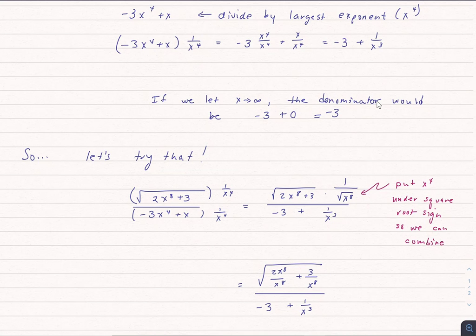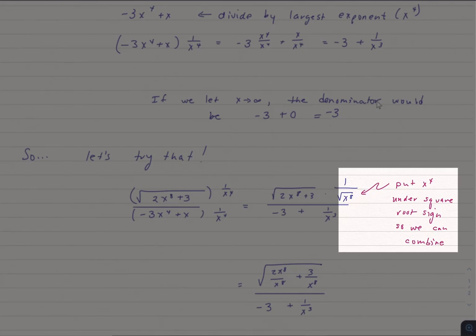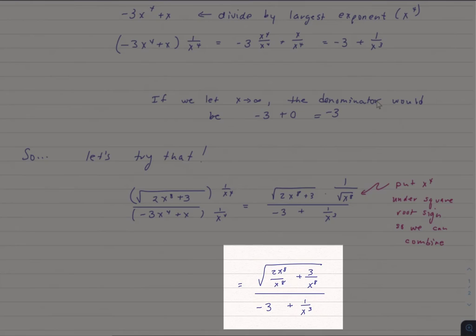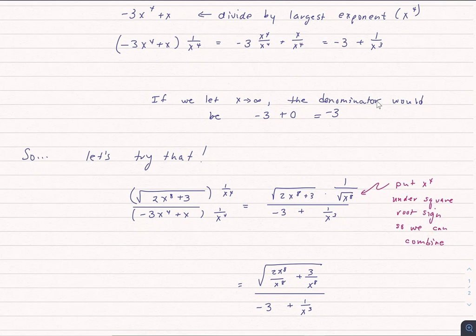And because what's in the numerator is under a square root sign, I'm going to rewrite 1 over x to the fourth as 1 over the square root of x to the eighth. It's the exact same thing. But now I can combine those square roots together in the numerator. And then I get in the numerator square root of 2x to the eighth divided by x to the eighth plus 3 over x to the eighth. And we already figured out our denominator would be negative 3 plus 1 over x to the third.